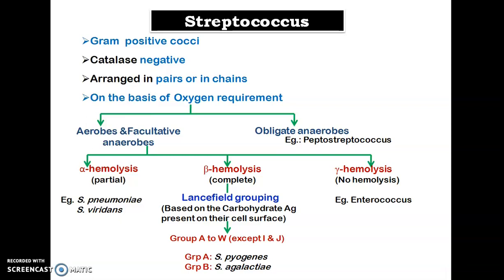Streptococcus is arranged in pairs or in chains. Staphylococcus appears as a bunch of grapes, but in case of Streptococcus they are arranged in pairs or in chains. On the basis of oxygen requirement, Streptococcus are divided into two groups: aerobes and facultative anaerobes, and obligate anaerobes. Aerobes and facultative anaerobes form the majority of Streptococcus species, while obligate anaerobes can live only in the absence of oxygen.